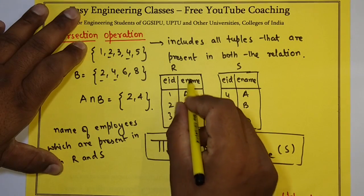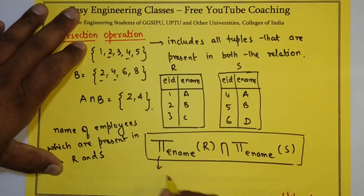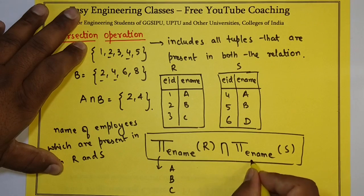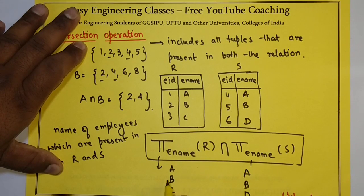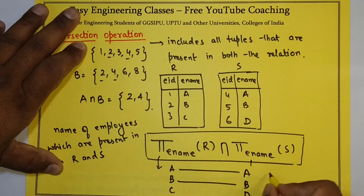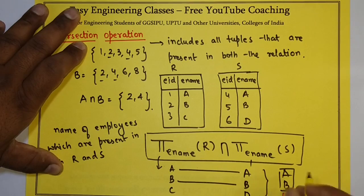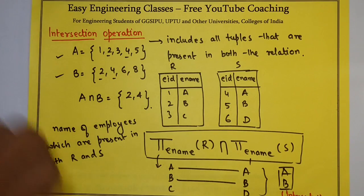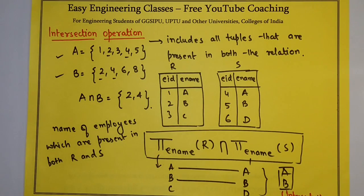This expression — what will happen here? The result from R will have values A, B, and C, and from S it will have A, B, and D. This is how the intersection operator works.